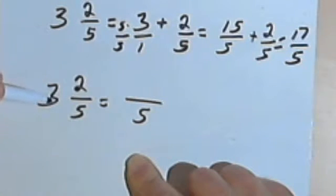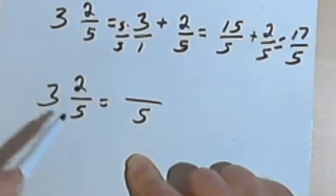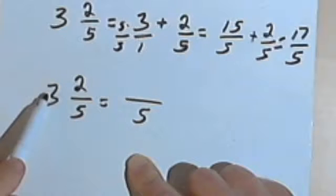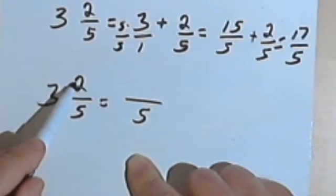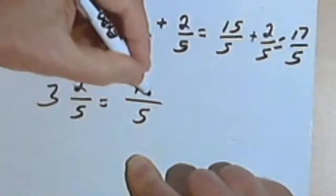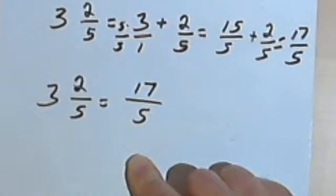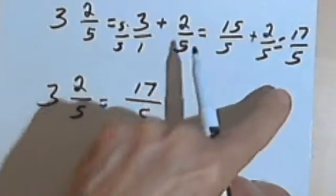And then since this is 3 plus 2 fifths, I'm going to take the 3 times 5, the 15, and add a 2. So that's going to give me 17. Same answer as before.